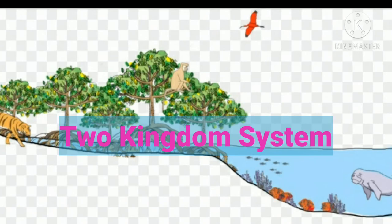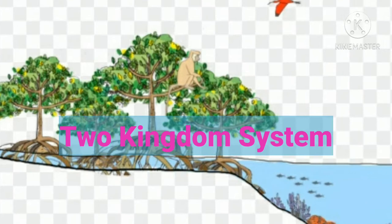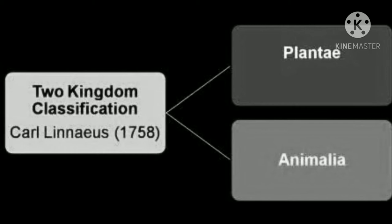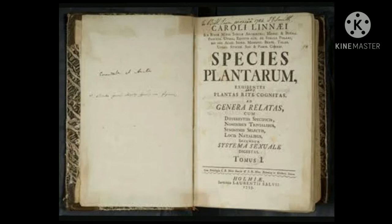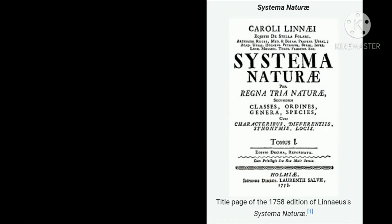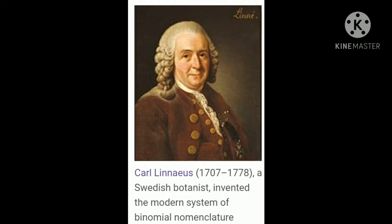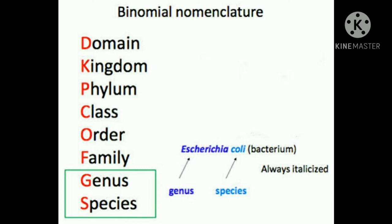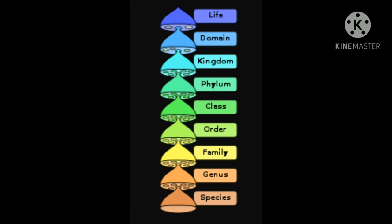Two Kingdom System: One of the earliest systems of classification, called the Two Kingdom Classification, was proposed by Carolus Linnaeus, a Swedish botanist. He classified all living organisms into two kingdoms on the basis of nutrition and locomotion. His books on the classification of plants and animals are considered to be the beginning of modern botanical and zoological nomenclature — a system of naming plants and animals. Nomenclature in microbiology, which came much later, was based on the principles established for the plant and animal kingdoms.